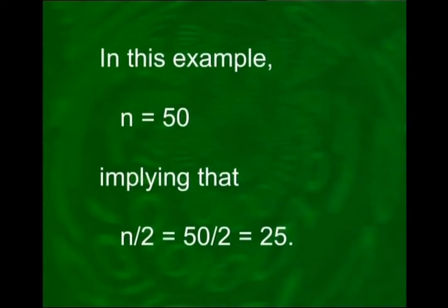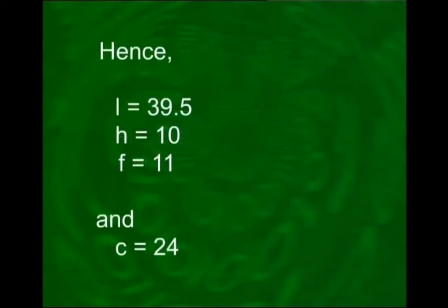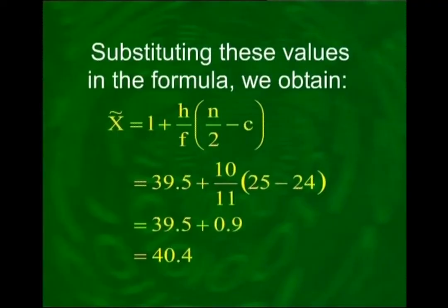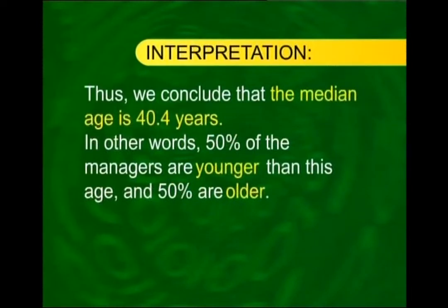In this example, N = 50, implying N/2 = 25. As we can see in the table, the third class is the median class. Hence L = 39.5, H = 10, F = 11, and C = 24. Substituting these values in the formula, we obtain x̃ = 40.4. Thus, the median age is 40.4 years. In other words, 50% of the managers are younger than this age and 50% are older.